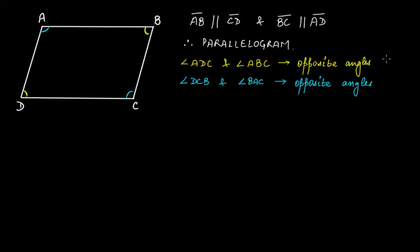Now if you look at angle D and angle C — the correct way to say it is angle ADC and angle BCD. Angle ADC and angle BCD form one pair of adjacent angles.